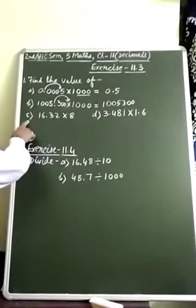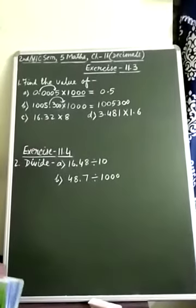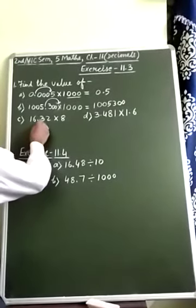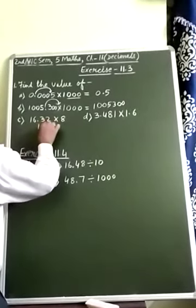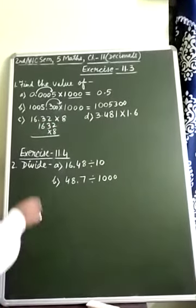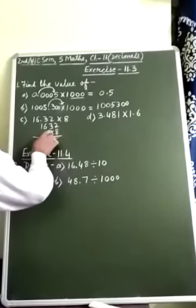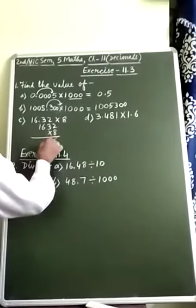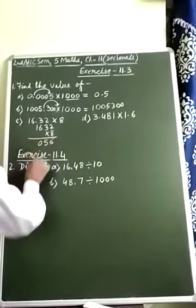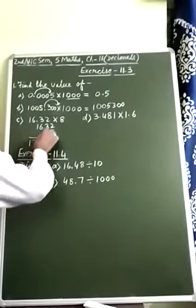Student, look at C1. 16.32 you have to multiply by 8. Student, ignore this decimal point and write 1632 multiply it by 8. This is multiplication of whole numbers. 8, 2's are 16, 1 carry. 8, 3's are 24 plus 1, 25. 2 carry. 8, 6's are 48 plus 2, 50. 5 carry. 1, 8's are 8 plus 5, 13.